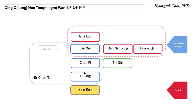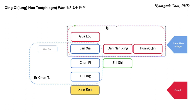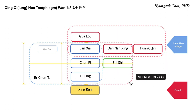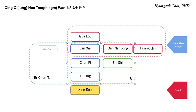So this is Tao Tan Tang. Can you see Er Chen Tang here? Ban Xia, Chen Pi, Fu Ling, and Qi Shi or Ji Ke, and Nan Xing. So this part is Tao Tan Tang.